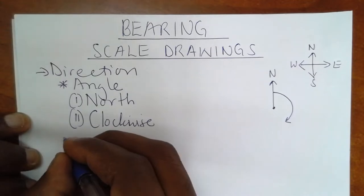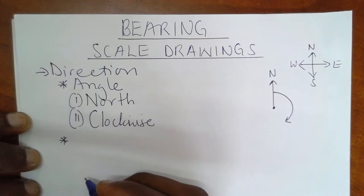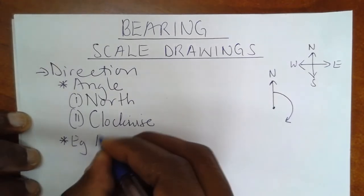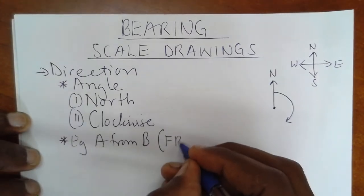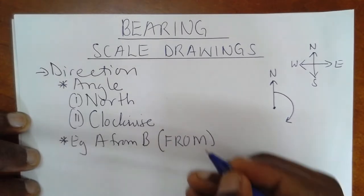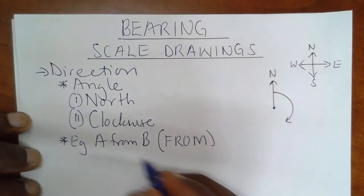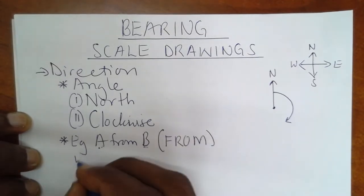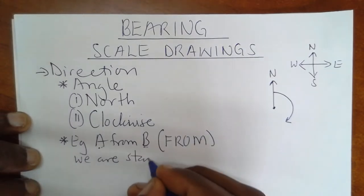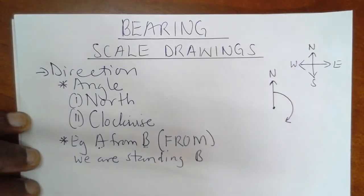Finally, because in order to find the direction, we must have two positions. For example, A from B. Take note of the word from, because the word from exactly tells you where you are standing in order to see the direction of the other. So in this case, A from B means we are standing at position B in order to see position A.